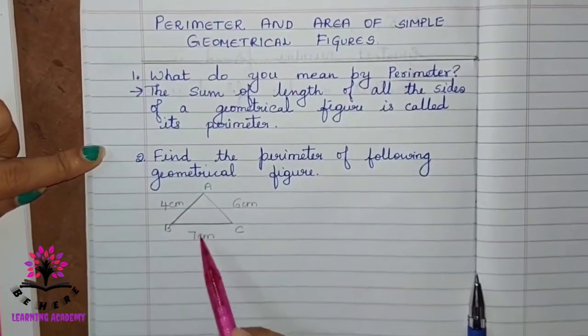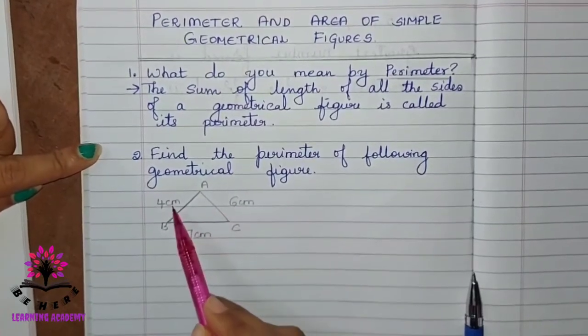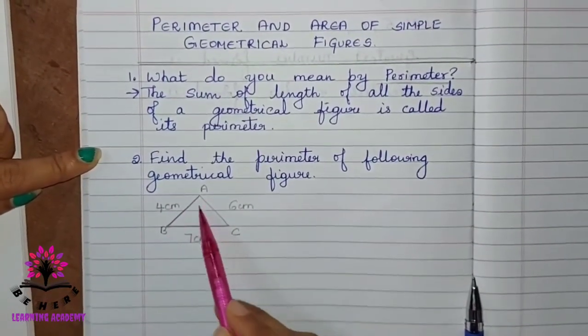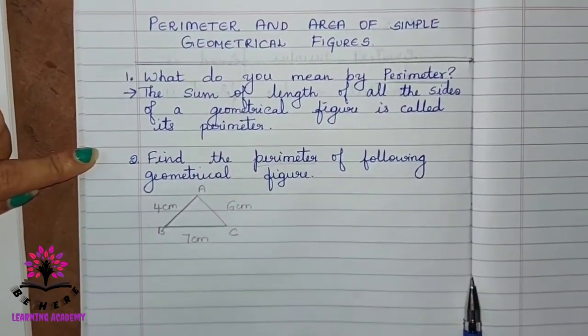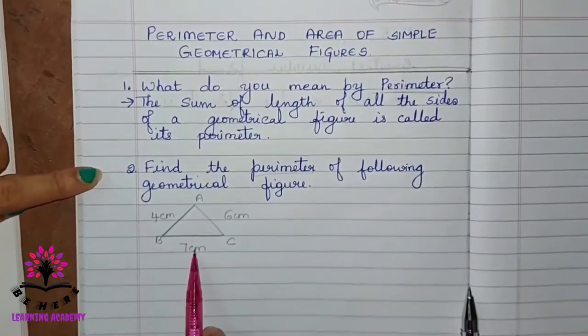And the length of this side is given here. When you find out the sum of the length of the sides of this triangle, you will get its perimeter. Now, let us solve this question.